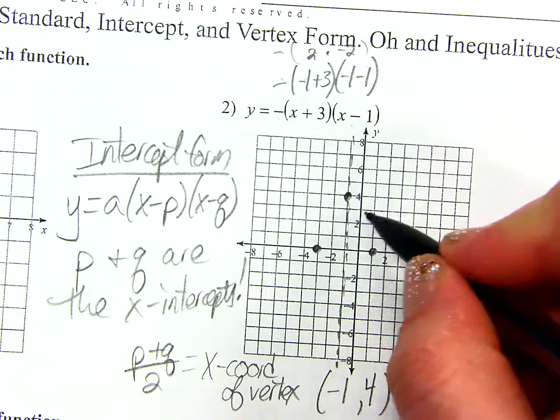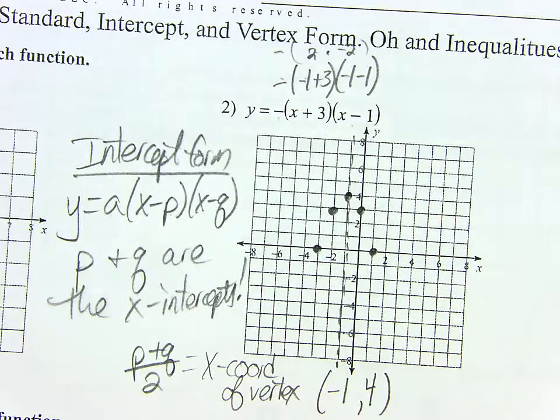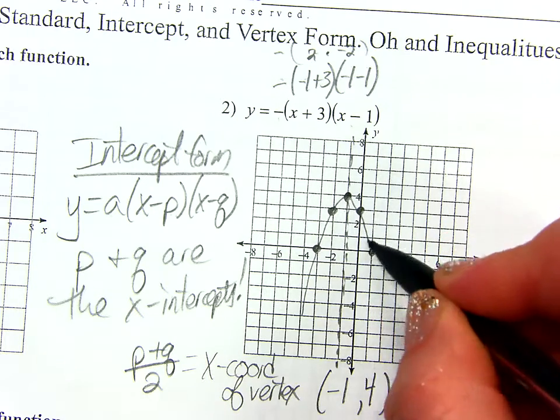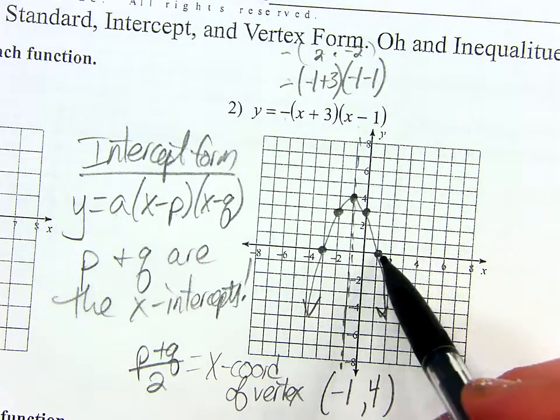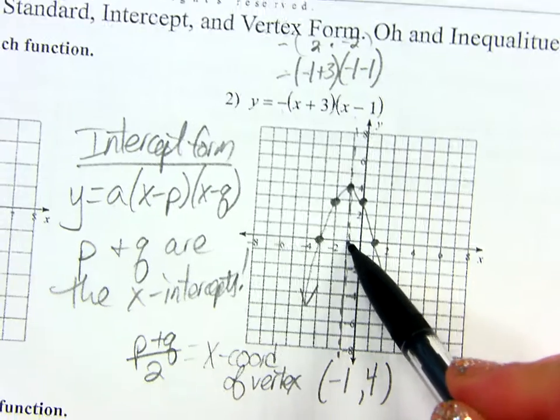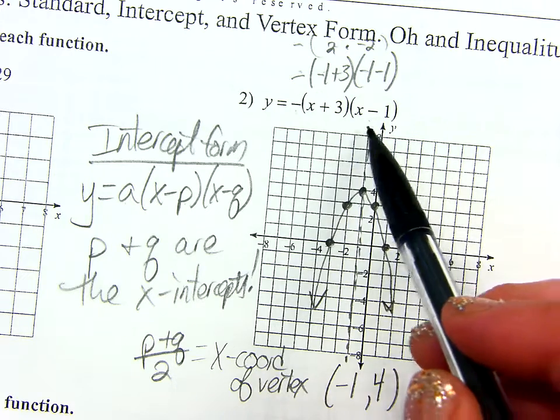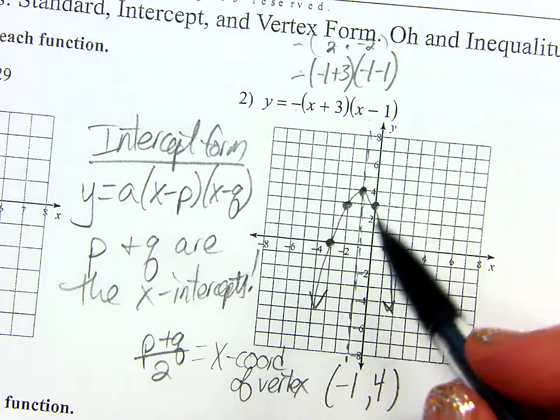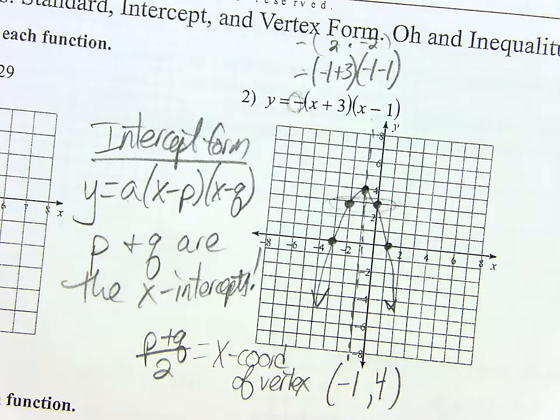But don't forget about this negative out in front. So I get out a positive four. Does everybody agree with my math? Now I know where my vertex is: negative one, four. I can still use my little trick, right? If A is negative one, how would I get another point from my vertex? If you're thinking, wouldn't you just go down one over one, you're right. Down one to the right one. Buy one, get one free. There's five dots, that's enough.